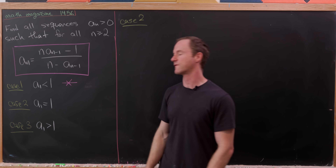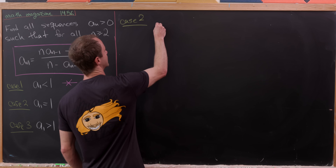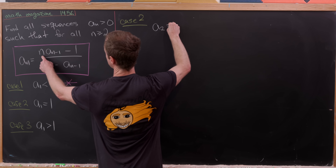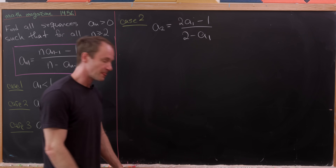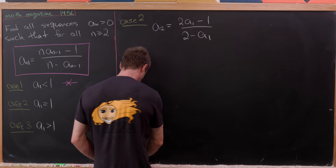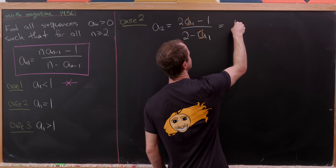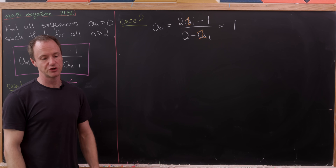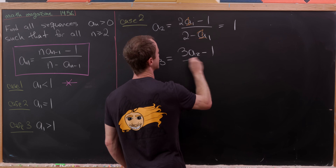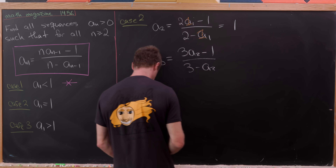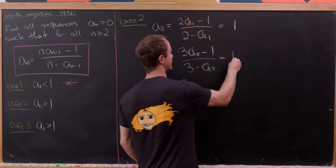Now let's consider Case 2: a₁ = 1. We compute a₂ = (2·a₁ - 1)/(2 - a₁) = (2·1 - 1)/(2 - 1) = 1/1 = 1. Then a₃ = (3·a₂ - 1)/(3 - a₂) = (3·1 - 1)/(3 - 1) = 2/2 = 1. So a₃ = 1 as well.